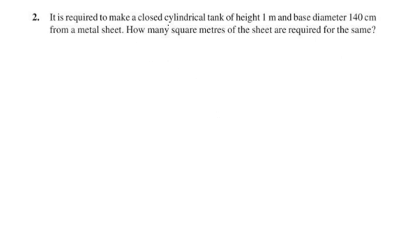Second question: it is required to make a closed cylindrical tank of height 1 meter and base diameter 140 cm from a metal sheet. How many square meters of sheet are required? This requires finding the total surface area.